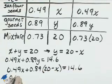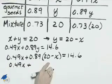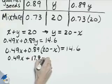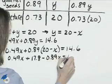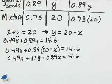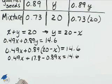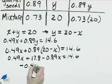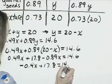I'm clearing out the parentheses. 0.49X plus 0.89 times 20 is 17.8 minus 0.89X equals 14.6. Then we can combine 0.49X and 0.89X and that gives us negative 0.4X plus 17.8 equals 14.6.